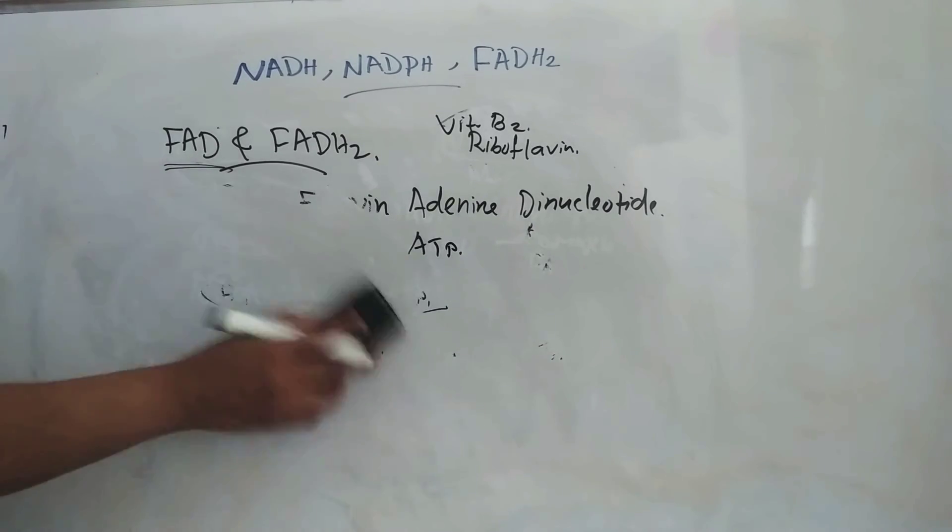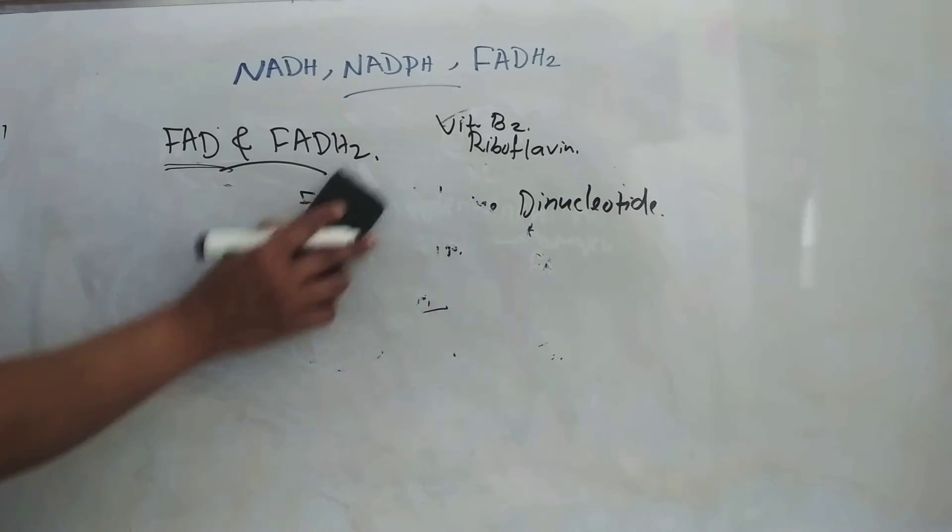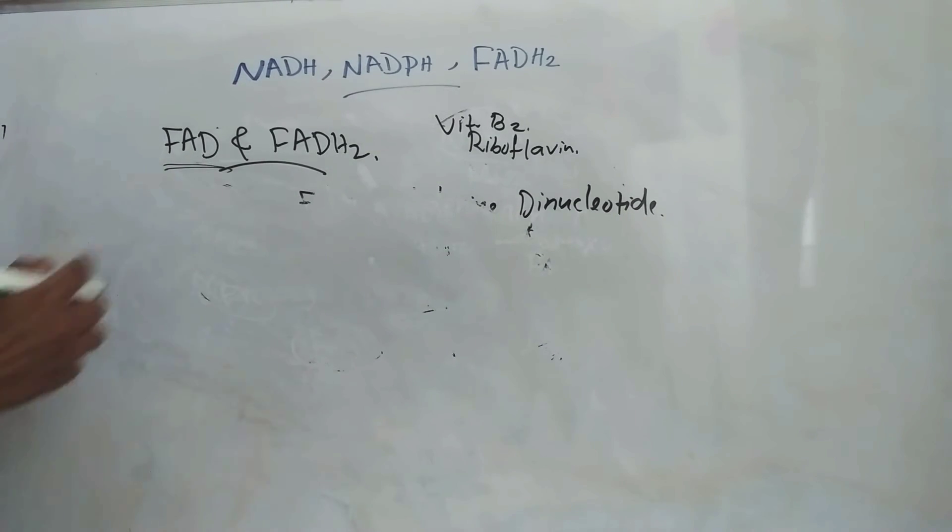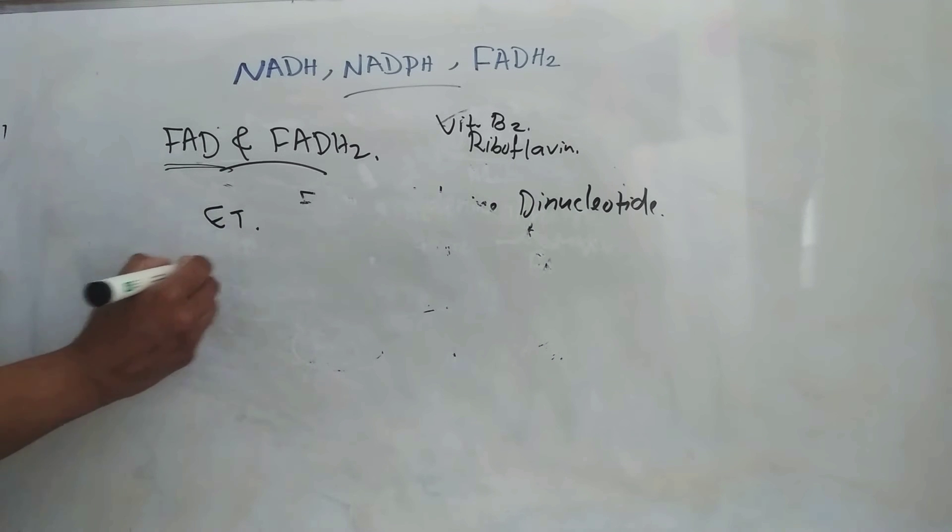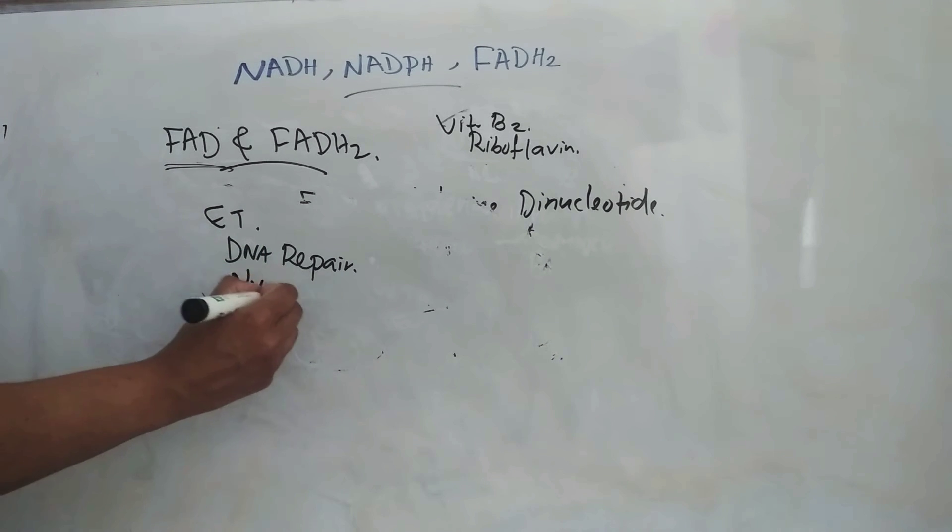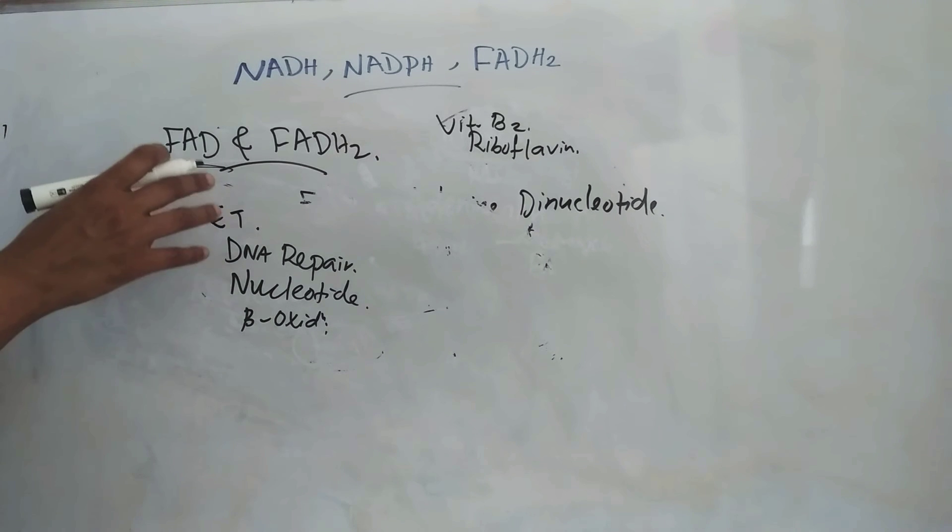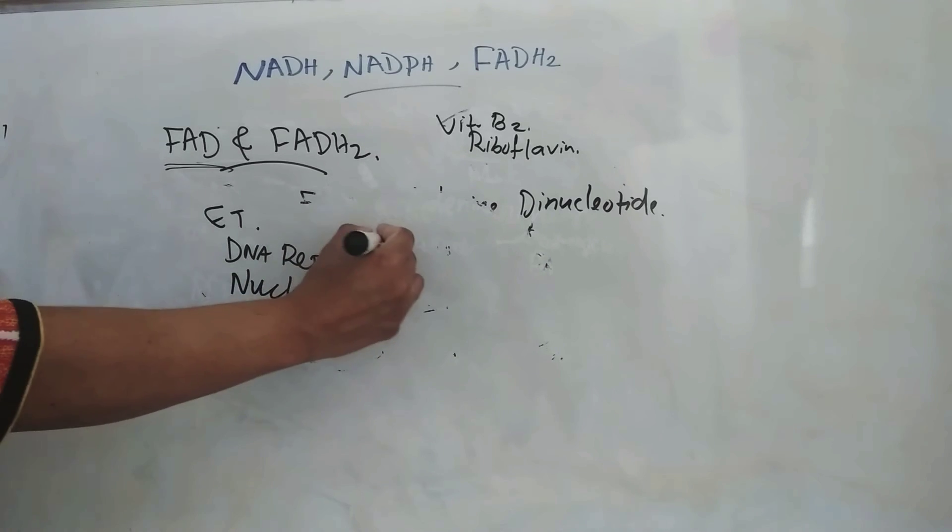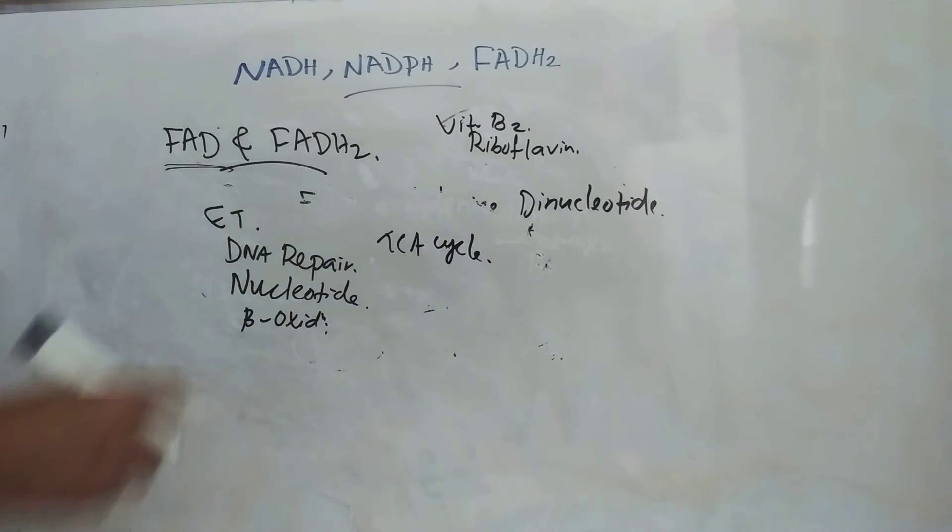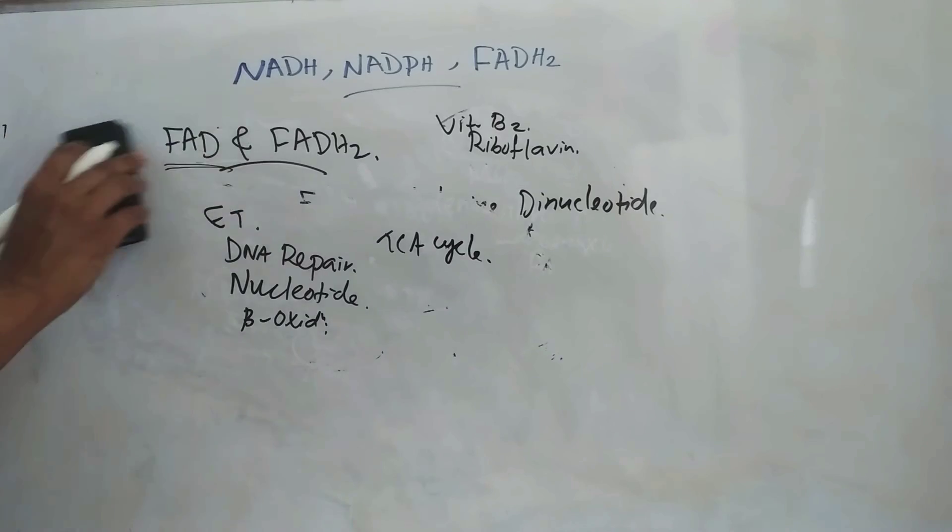Then these FADH2-dependent proteins function in a large variety of metabolic pathways, including electron transport, DNA repair, nucleotide biosynthesis, then beta oxidation of fatty acid, then amino acid catabolism, etc. It is also a part of TCA cycle. So that is about FAD and FADH2.